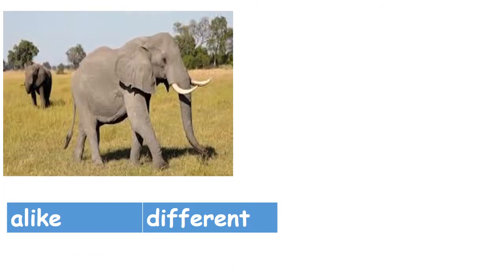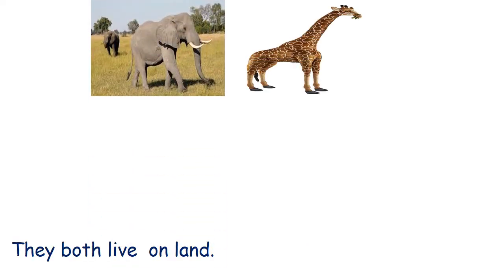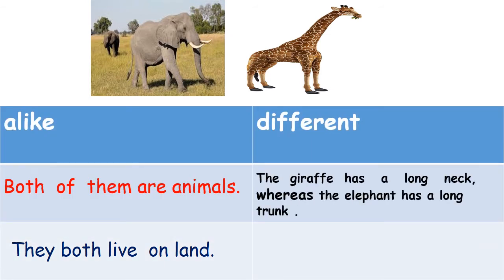Now, if you look at these two animals, I want you to look at them and try to tell me: how are they alike and how are they different? It is very clear that both of them are animals and they both live on land.